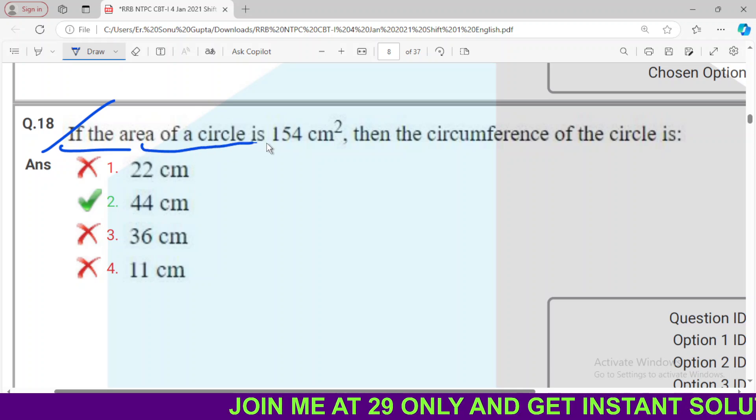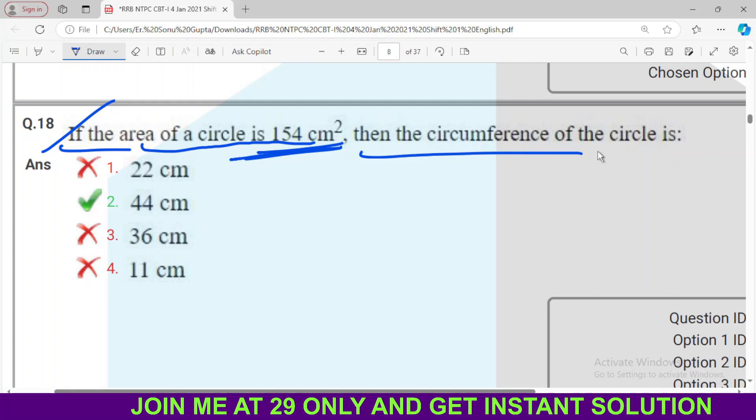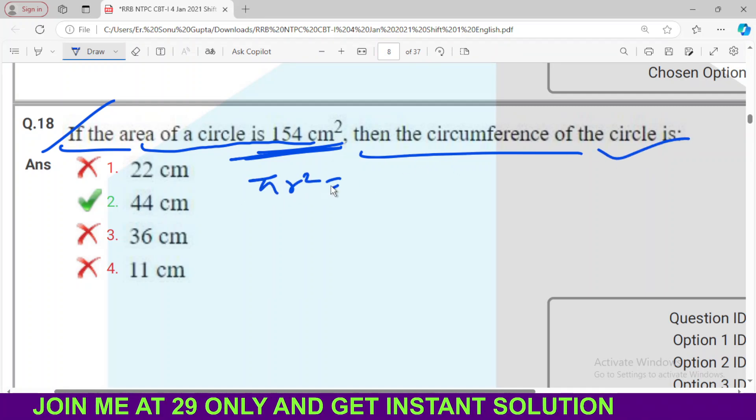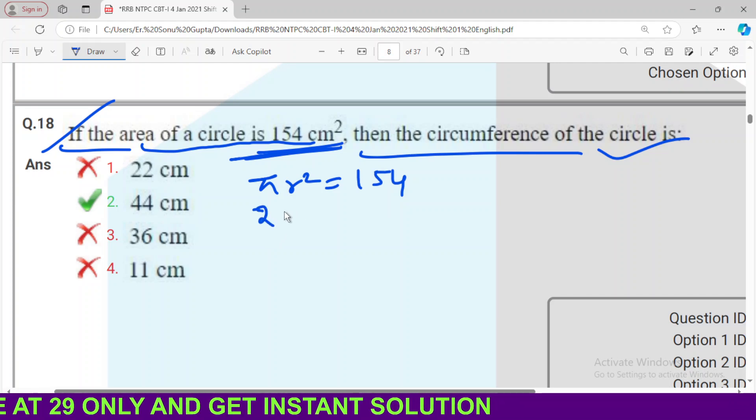It's a must, right? If the area of the circle is 154 cm², then the circumference of the circle. Wow, wow, wow. Who will not make it? This is the circumference. How are we asking?